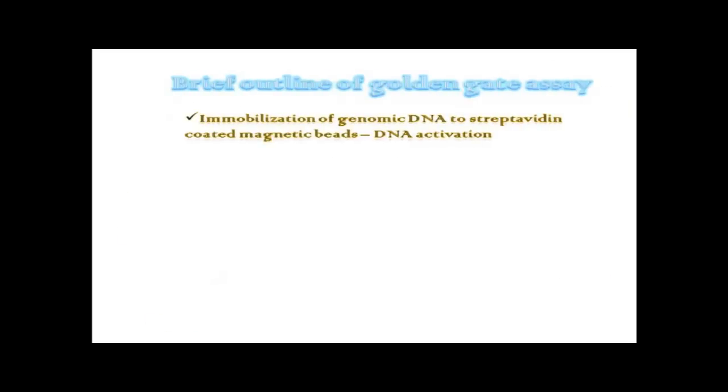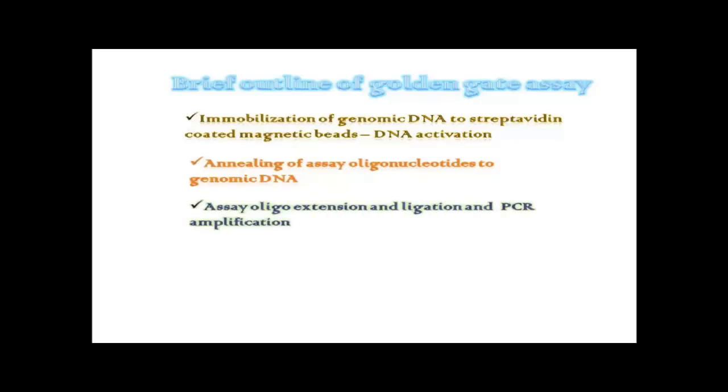The brief outline of the Golden Gate assay: it involves activation of DNA by paramagnetic particles, annealing of assay oligonucleotides to the genomic DNA, followed by the assay oligo extension and ligation and the PCR amplification, PCR product preparation and hybridization to arrays and imaging.